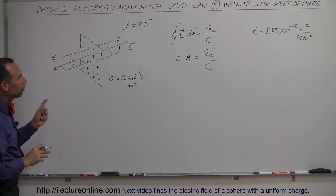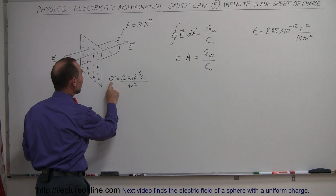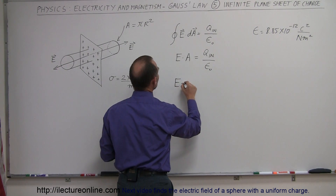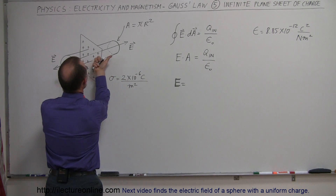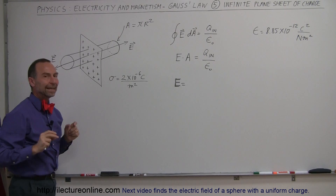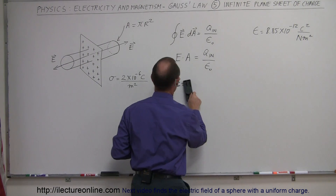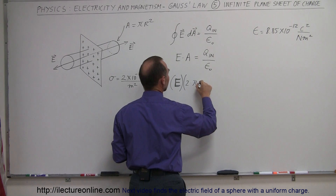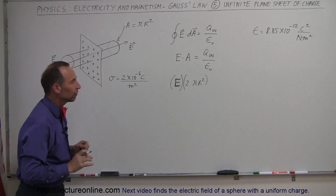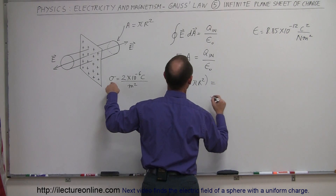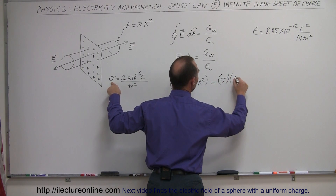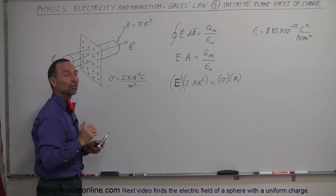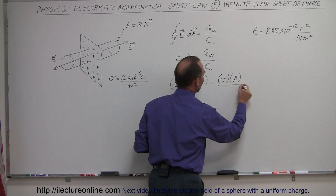The Q inside can be calculated by taking the surface density and multiplying it times the area. Since we have electric field emanating on both ends, we take both ends into account, so it's E times 2 times pi r squared. That equals Q inside, which equals the charge density times the area — the area units cancel and you're left with the charge — divided by epsilon sub nought. The area here is also pi r squared.